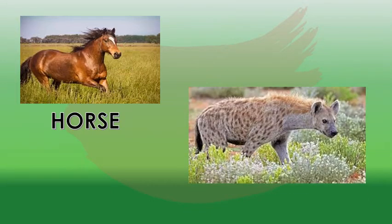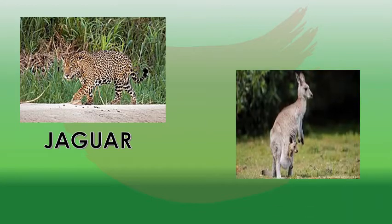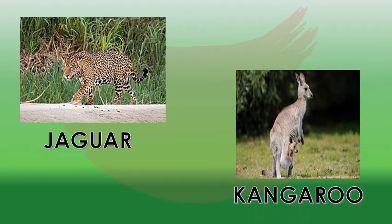This picture shows you hyena. What is this? Hyena. What is this? The dangerous jaguar. What is this? Jaguar. Next picture is kangaroo. What is this? Kangaroo.